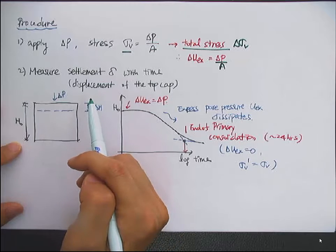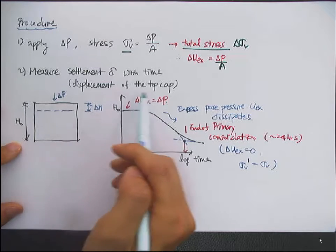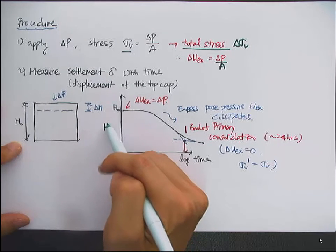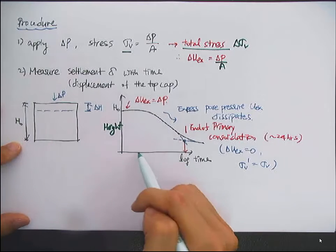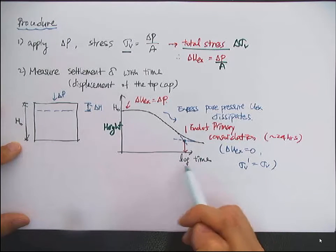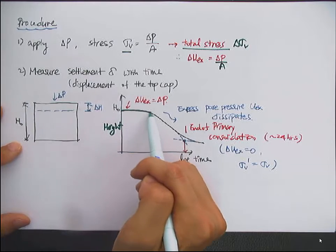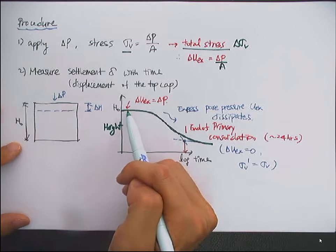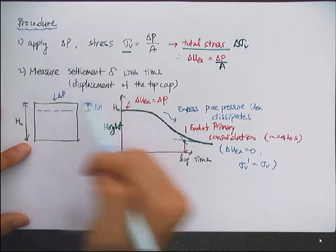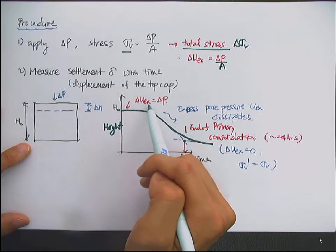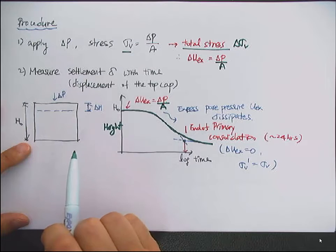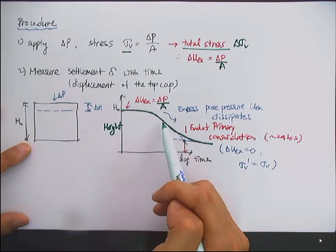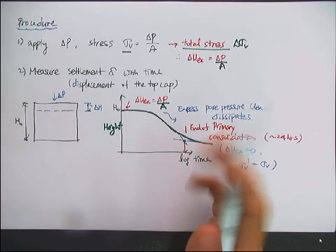So you can plot the height change with time on a logarithmic scale, and you'll have this kind of smooth curve. At the initial moment, as soon as you apply the delta P, you'll have an excess pore pressure increase by delta P over A. Note that delta P is the force term. This excess pore pressure will dissipate as time goes by, because the water can escape through the clay specimen.